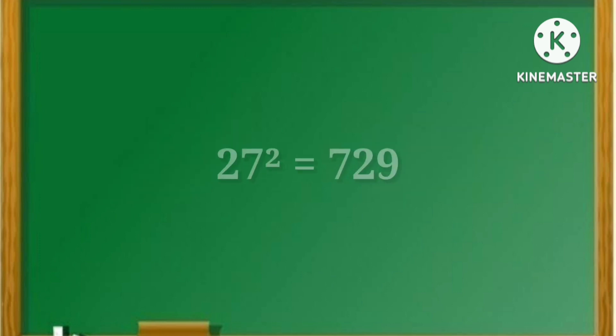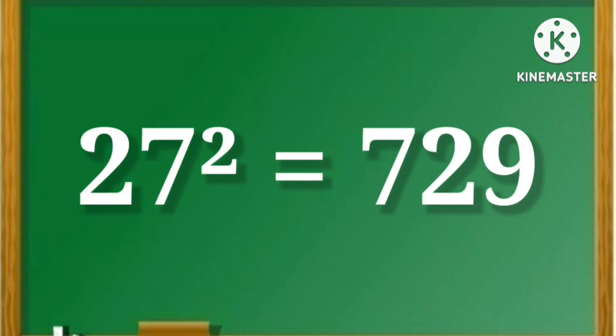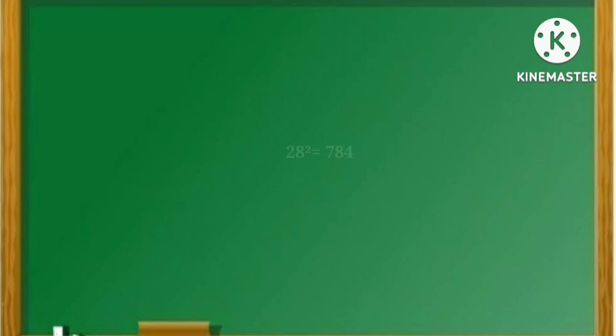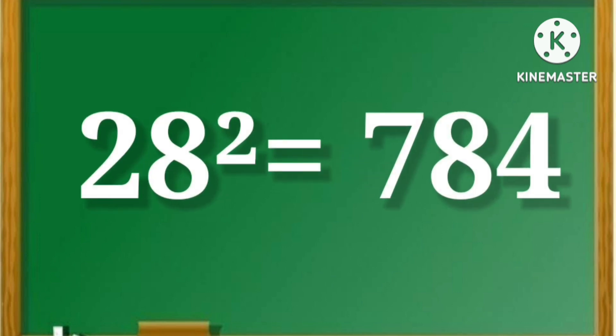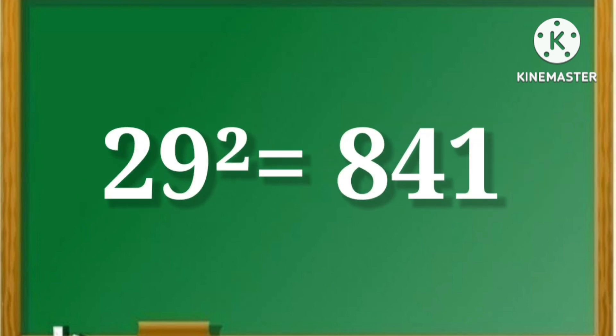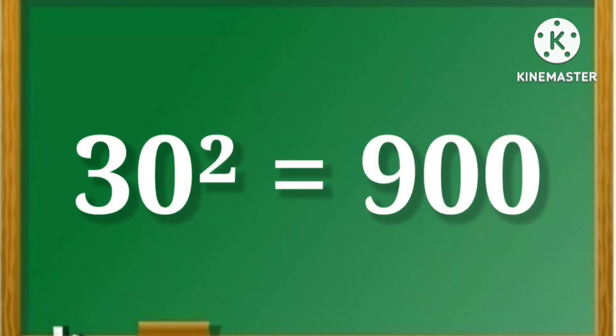27 squared is equal to 729. 28 squared is equal to 784. 29 squared is equal to 841. 30 squared is equal to 900.